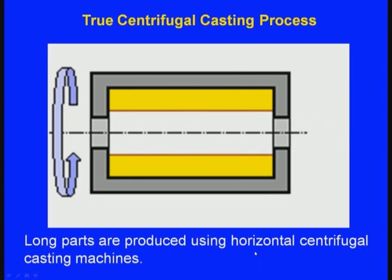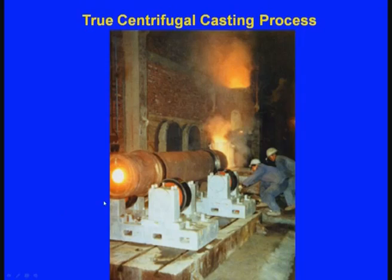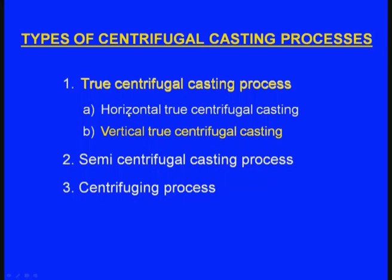Long parts are produced using the horizontal centrifugal casting process. In a true photograph of the setup, we can see the metallic mould, the ladle through which molten metal flows to the cylindrical metallic mould, and the bottom rollers on which the mould is supported, with additional rollers on the other sides. This completes the horizontal true centrifugal casting.